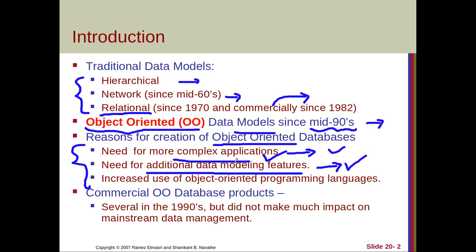The second reason is the need for additional data modeling features. Traditional models were not applicable for all types of programs, so more features were required that were not present in traditional data models. Object-oriented features were added into the object-oriented database system. The third reason was the increased popularity of object-oriented programming languages in the late 1990s. After the invention of Java, most applications were developed using OOP languages, making OO databases very useful for programmers familiar with OOP.